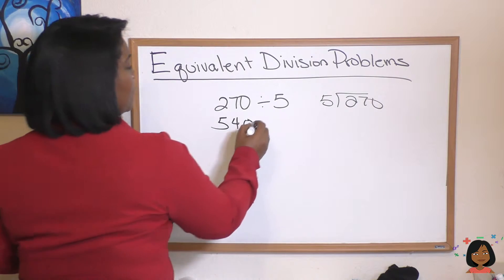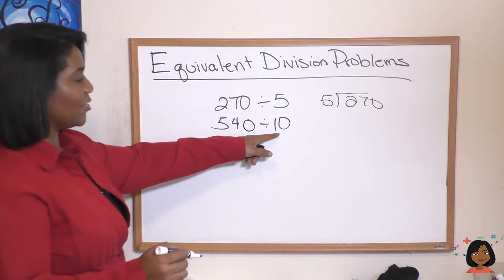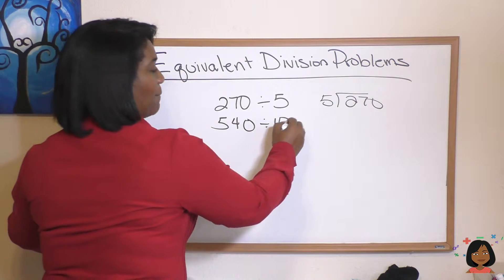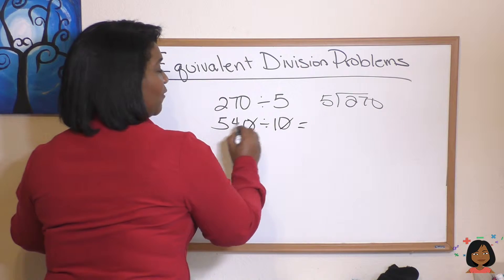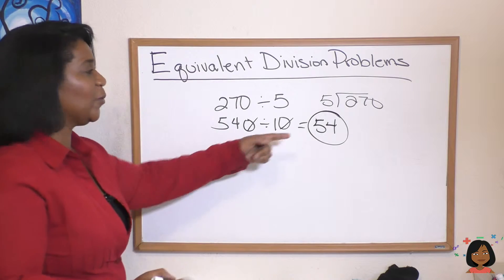Now it's a lot easier to divide 10 into 540. Really, if I drop both of these zeros, I get 54 divided by 1. My answer is 54.